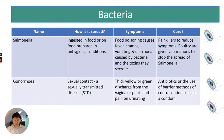Gonorrhea is spread through sexual contact — it's a sexually transmitted infection. The symptoms are a thick yellow or green discharge from the vagina or penis, and pain on urinating. It can be treated with antibiotics or prevented using a barrier method of contraception such as a condom.